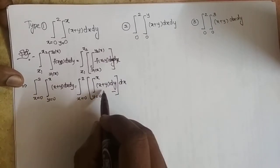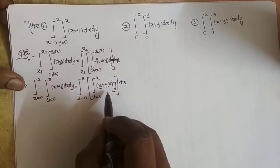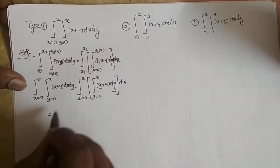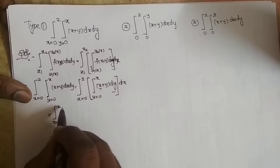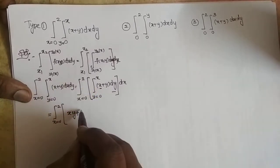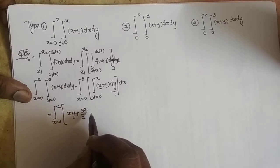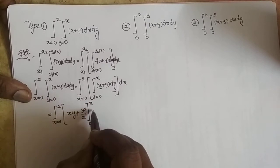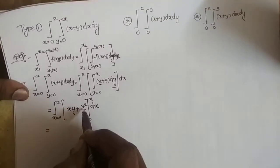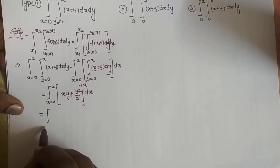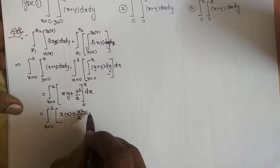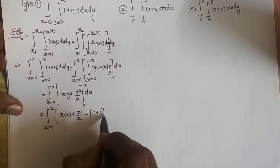Now integrating with respect to y, x should be treated as constant. So: integral x = 0 to 2, integration of x as constant gives xy, plus integral of y gives y²/2 — using the formula x^(n+1)/(n+1) — evaluated from 0 to x, then dx. We replace y by x: integral x = 0 to 2 of [x·x + x²/2] minus [0 + 0] dx.